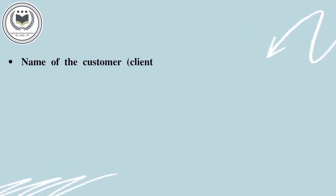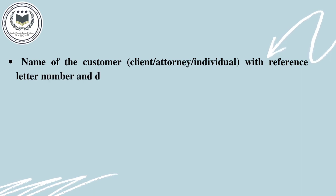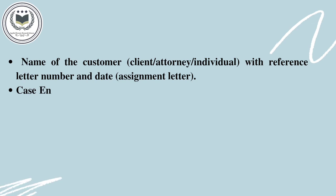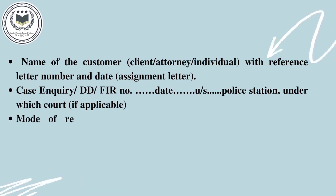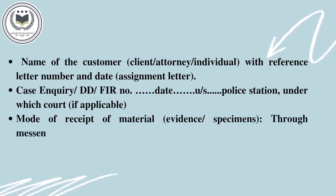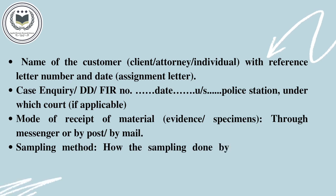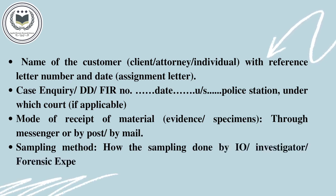Fifth, the name of the customer — whether client, attorney, or individual — with reference letter number and date of the assignment letter. Sixth, the case inquiry details: DD number, FIR number, date, police station, and under which code — if applicable, these should be mentioned. Seventh, the mode of receipt of material, i.e., whether the evidence or specimens were collected through a messenger, came by post, or by mail. Next, the sampling method — how sampling was done by the investigator or forensic expert — and all sampling methods used at the crime scene to collect samples should be mentioned.